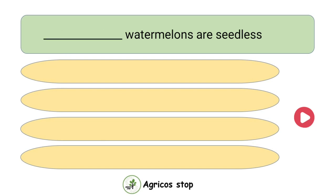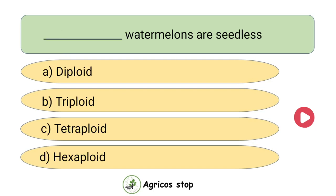Which watermelons are seedless? Options are diploid, triploid, tetraploid, and hexaploid. The answer is triploid. Triploid watermelons are seedless.